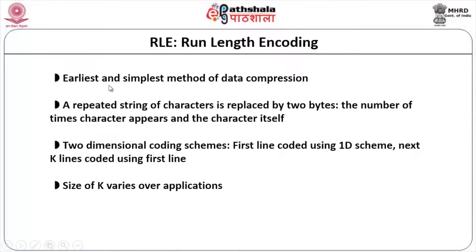Run length coding is one of the earliest and simplest methods of data compression, and it is a very effective one. What does it do? A repeated string of characters is replaced by 2 bytes. So naturally, if that particular number of characters appears more and more, the character itself is taken into consideration and replaced.